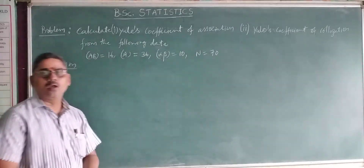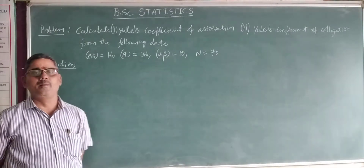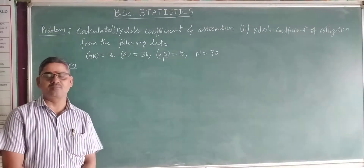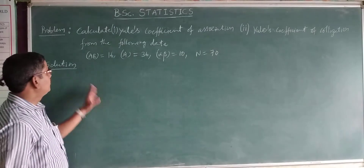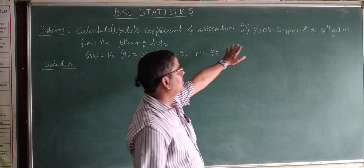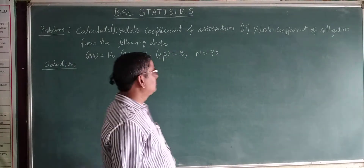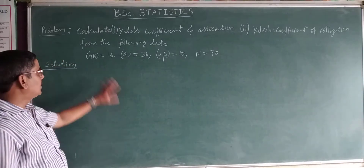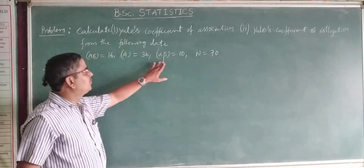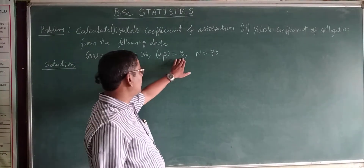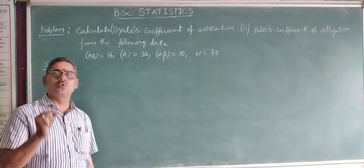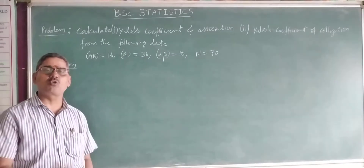Welcome. In this lesson, we discuss one of the problems of actual use. Calculate Yule's coefficient of association and Yule's coefficient of colligation for the following data: frequency of ab is equal to 16, frequency of a is equal to 36, frequency of alpha beta is given as 10, and N is equal to 70. To calculate Yule's coefficient of association and colligation, which are very simple, we need to set up the table.